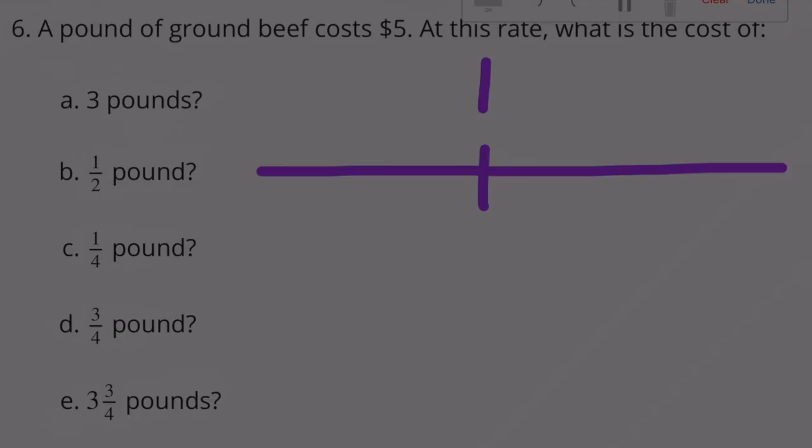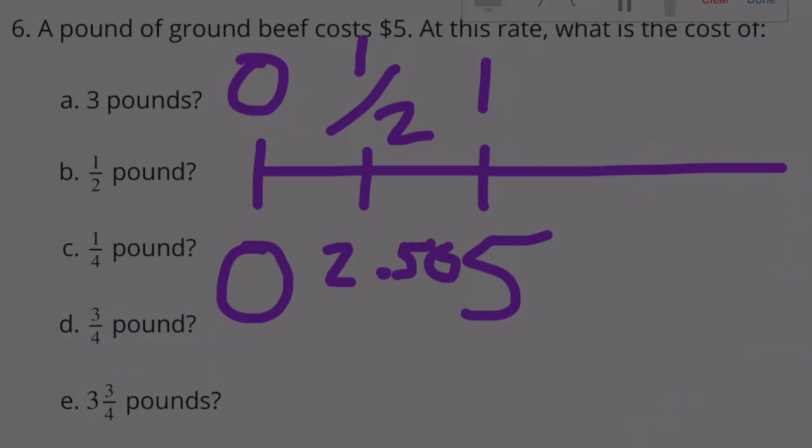A half a pound. If 1 pound is $5, then a half a pound would be exactly between $0 and $5, $2.50.